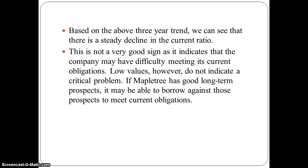Based on the above three-year trend, we can see that there is a steady decline in the Current Ratio. This is not a very good sign as it indicates that the company may have difficulty meeting its current obligations or current liabilities. However, these low values do not indicate a critical problem for Maple Tree. If Maple Tree has good long-term prospects, it may be able to borrow against those prospects to meet current obligations.